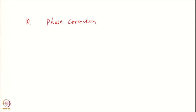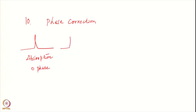Typically we know that NMR signals are of two types. One is a signal which we call an absorptive signal, also called a spectrum with zero phase. The other is a dispersive signal, which we may call a 90-degree phase signal.